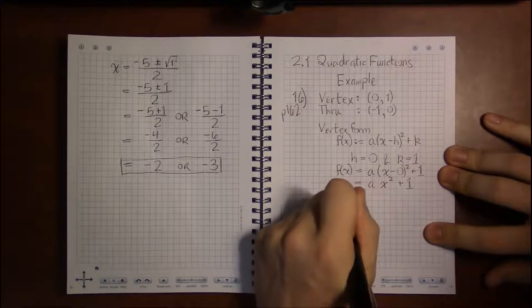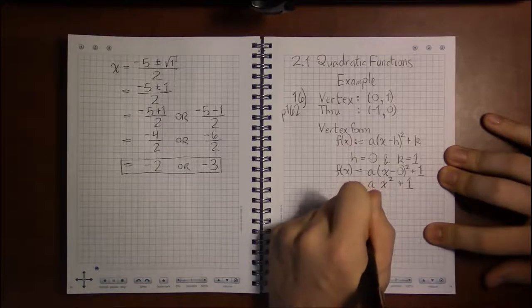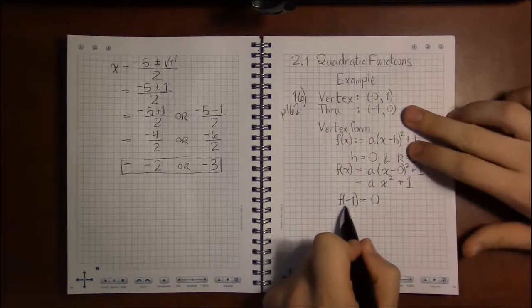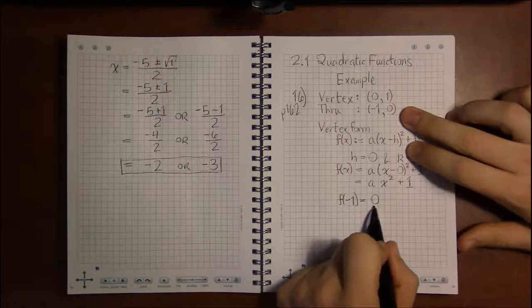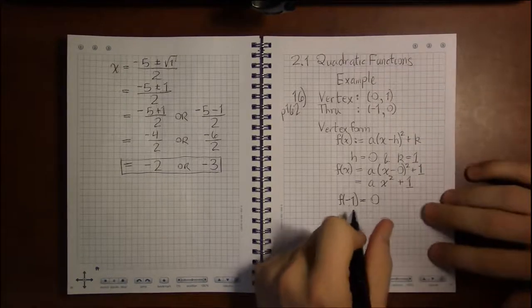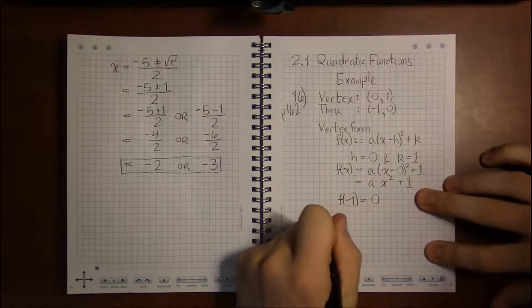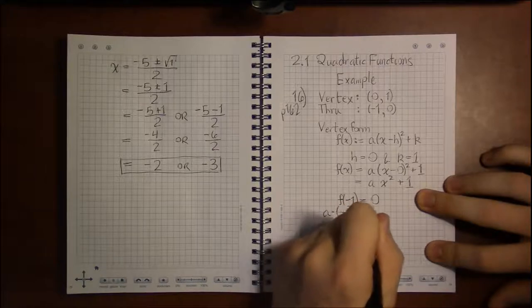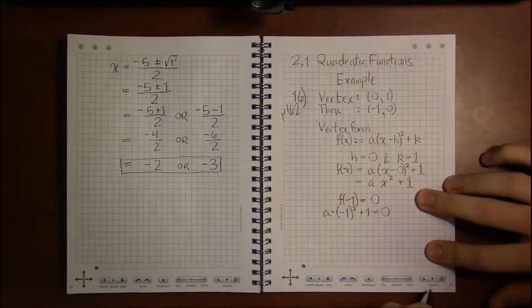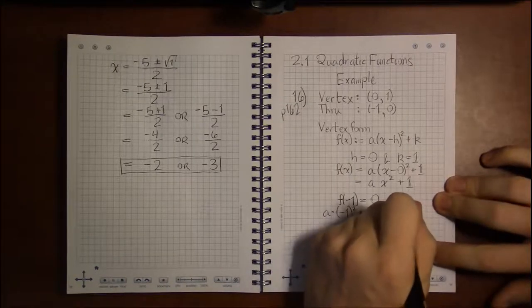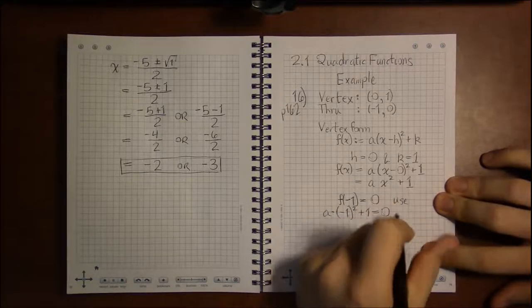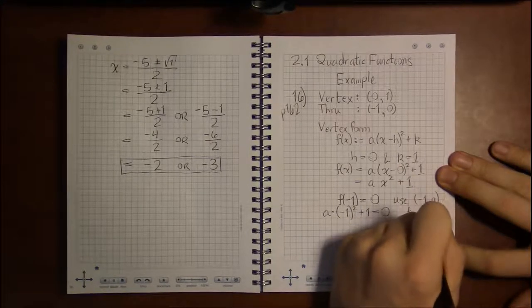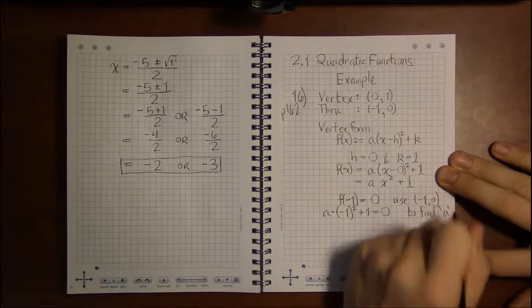So if the point passes through (-1, 0), that tells me that when x is -1, when the input is -1, y the output is 0. That's what this point (-1, 0) tells me. When x is -1, y is 0. So I plug -1 in for x, so a times (-1) squared plus 1, that's supposed to equal 0. So we're using, I forgot to note this outline what we're doing, use (-1, 0) to find the value of a.